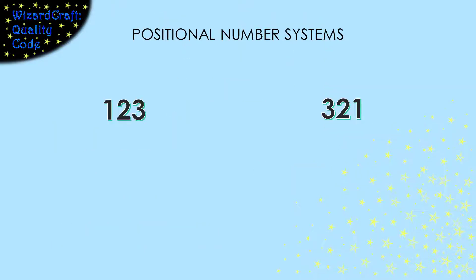The decimal numbers that you're used to are an example of a positional number system. In positional systems, the value of the character you write depends on which position it's in the number. For example, 123 and 321 are made of the same characters, but they represent very different values because the characters 3 and 1 are in different positions.